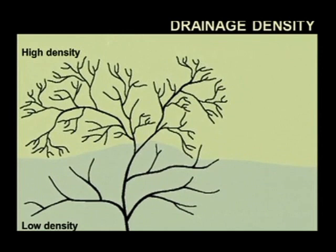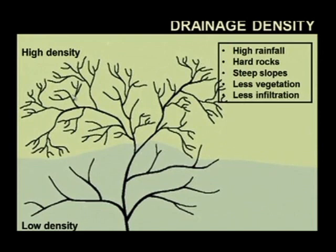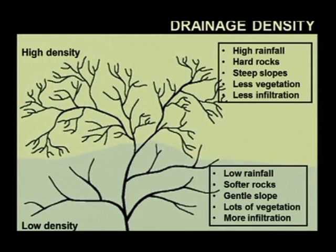You must be able to answer that question in the exams. Now if we have a look at this, we will see that this area here — the lightest shaded area — has a higher rainfall. Of course higher rainfall, that's why we've got more rivers there. Hard rocks: the water can't drain through, and the water actually remains on the surface of the earth. Steep slopes, less vegetation, and less infiltration. So that is why we have a high drainage density in that area.